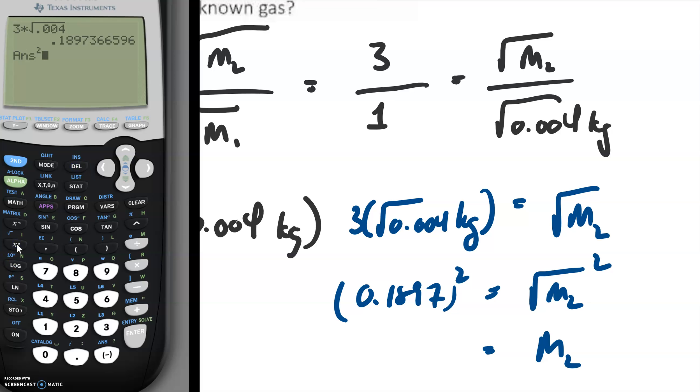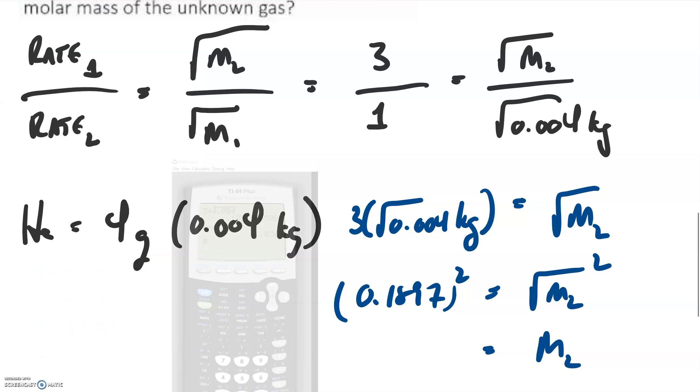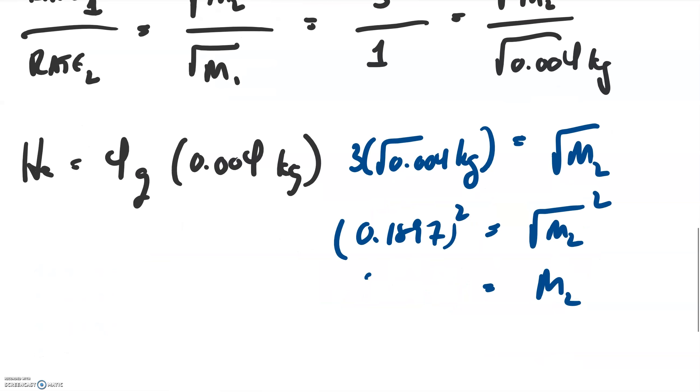So let's square our answer. Here is the molar mass of our unknown. And let's be careful, because this is in kilograms. And so the molar mass of our unknown is 36 grams. 0.036 kilograms.